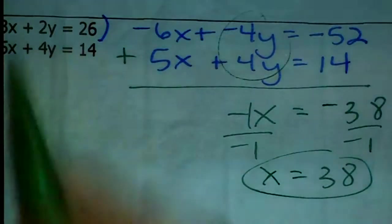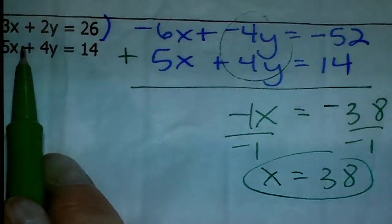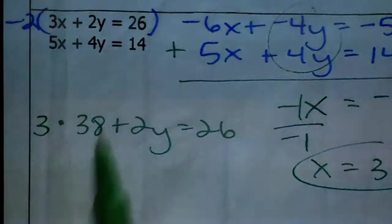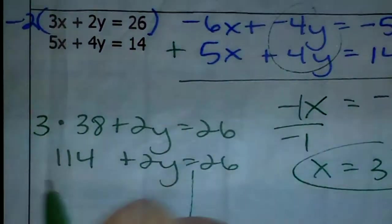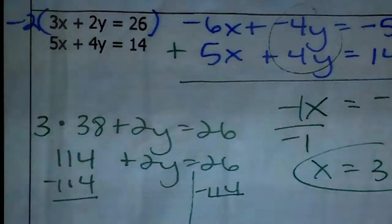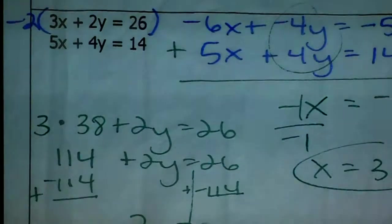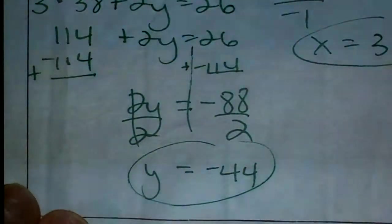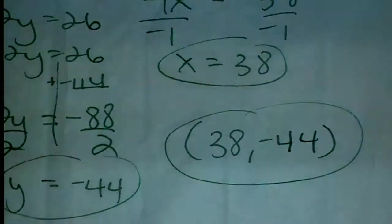Knowing X equals 38, I'll plug it into the original first equation: 3 times 38 plus 2Y equals 26. 3 times 38 is 114, so 114 plus 2Y equals 26. Subtract 114 — add negative 114 — so 2Y equals 26 plus negative 114, which is negative 88. Divide each side by 2 and Y equals negative 44. The solution to this system is 38, negative 44. Order matters in an ordered pair — 38 goes with X and negative 44 goes with Y.